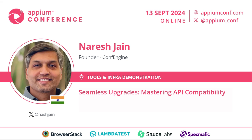Welcome everyone to the session 'Seamless Upgrades: Mastering API Compatibility' by Naresh Chan. Naresh is the founder of Confinjin, the very platform that powers APM Conference. Beyond Confinjin, he is also the founder and CEO of Specmatic, Agile India, and Zenshio. Additionally, Naresh serves as the chief catalyst at Jio, where I've had the personal privilege of working closely with him and his team. Without any further delay, over to you, Naresh.